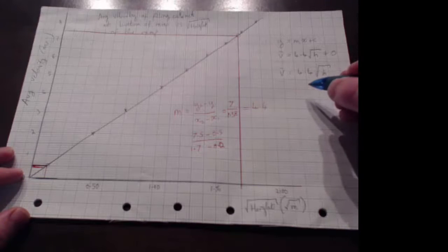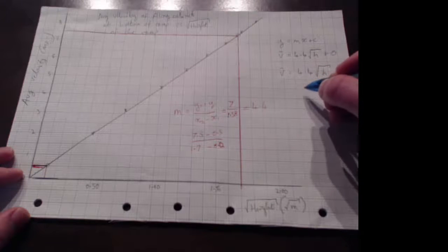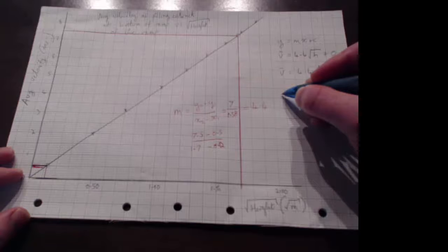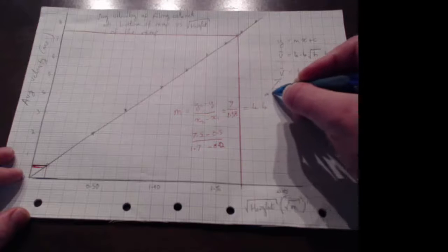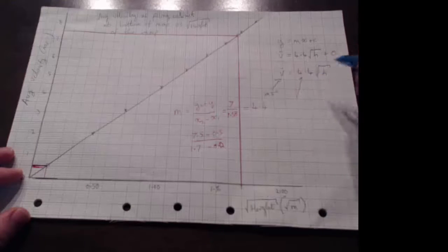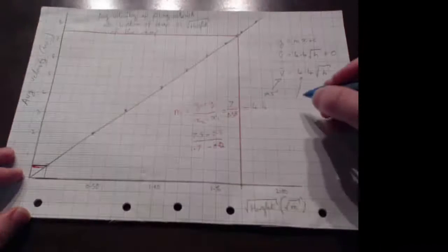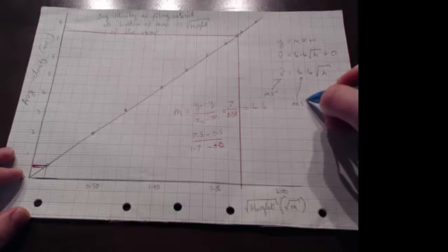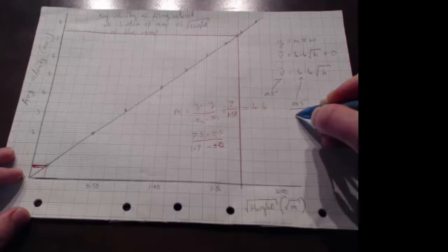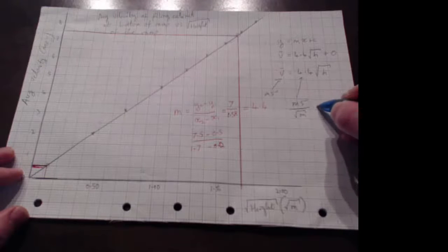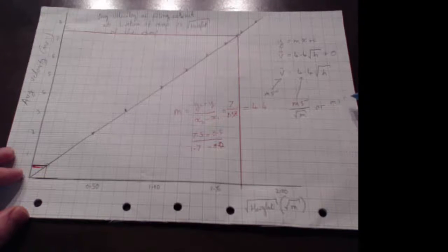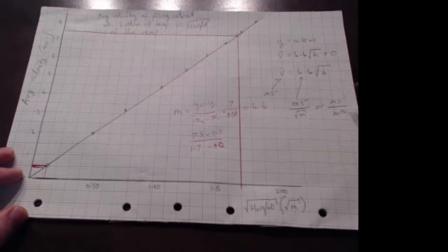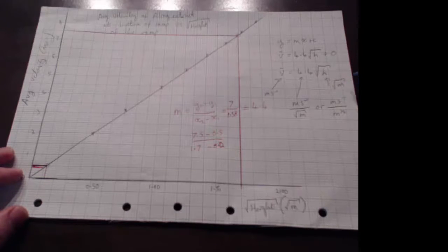It's sometimes worth writing in the gradient with units. My average velocity is in meters per second. The gradient units are meters per second per square root of meters — or meters per second over meters to the half. The square root of height has units of square root of meters, or m to the half.